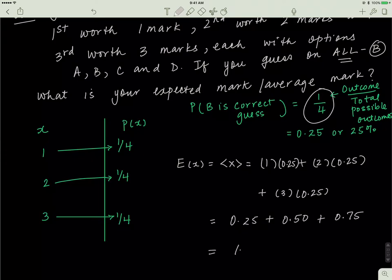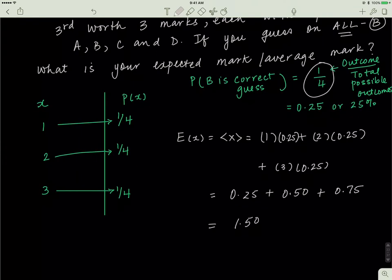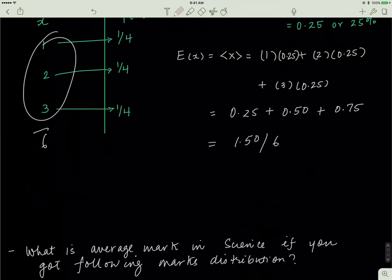You add all of these to get 1.50. So your expected mark is 1.50 out of six, which is probably a failing grade. The bottom line is that even statistics is telling you to study before your exams so you don't have to guess on them.